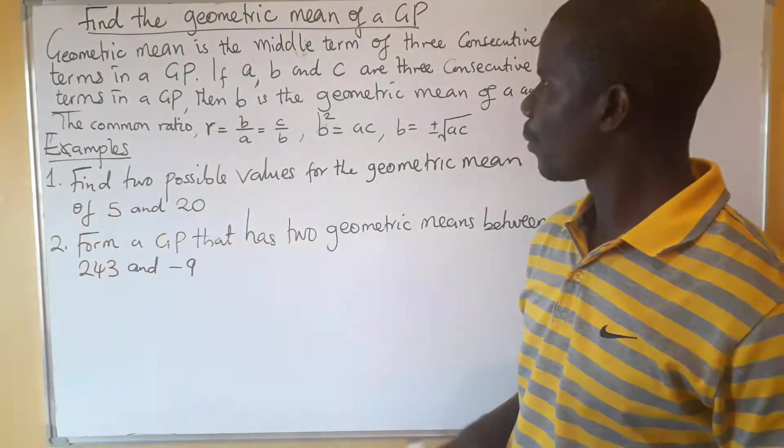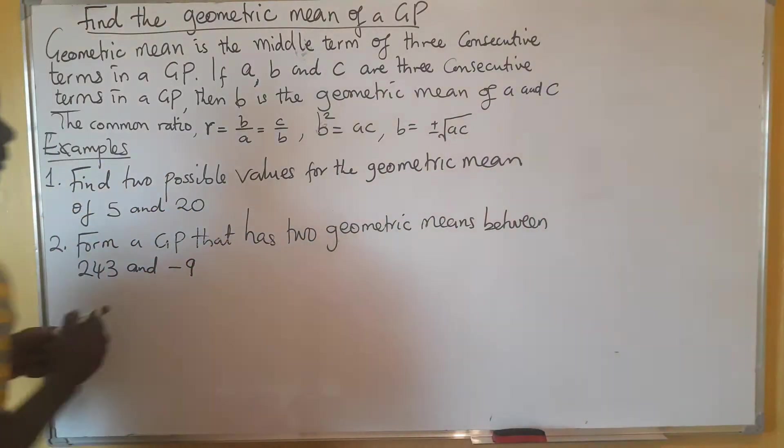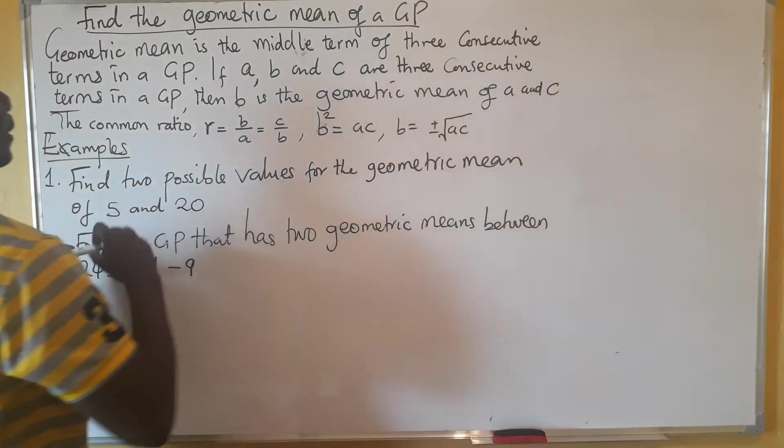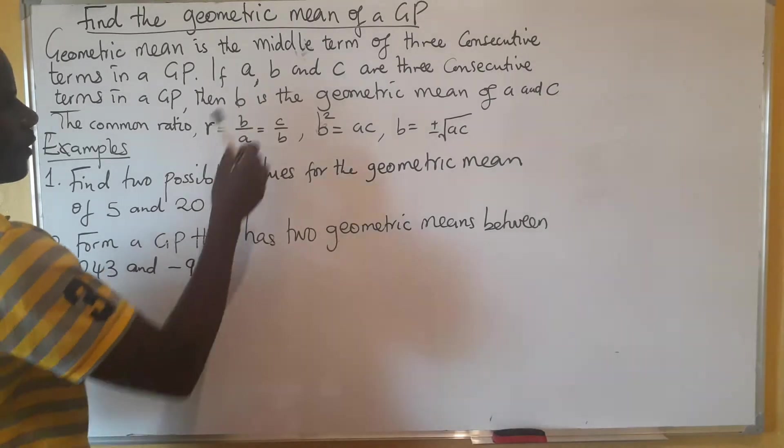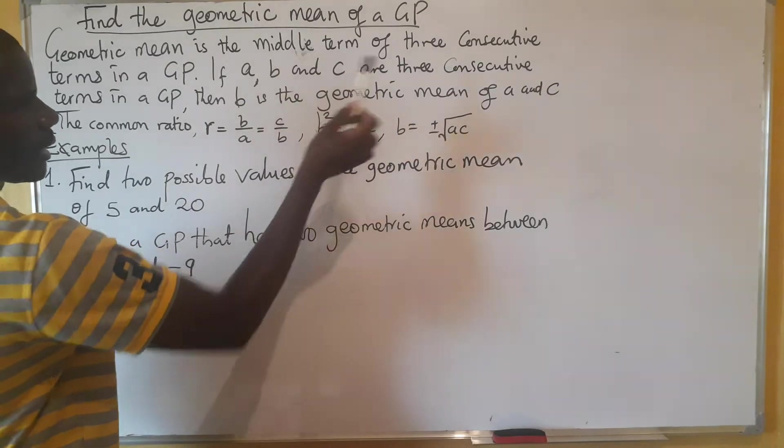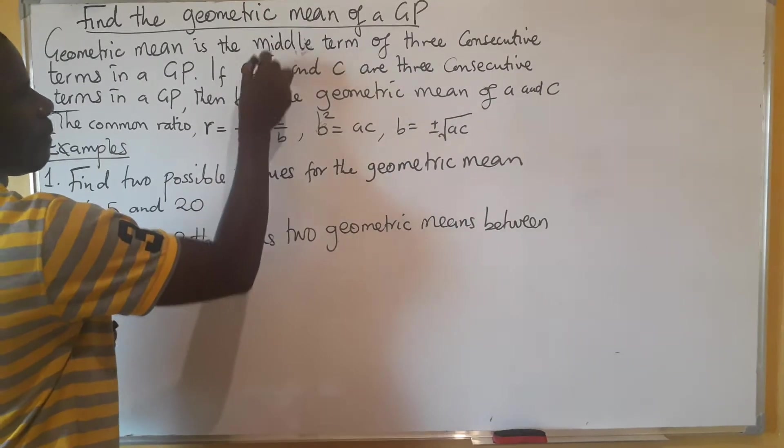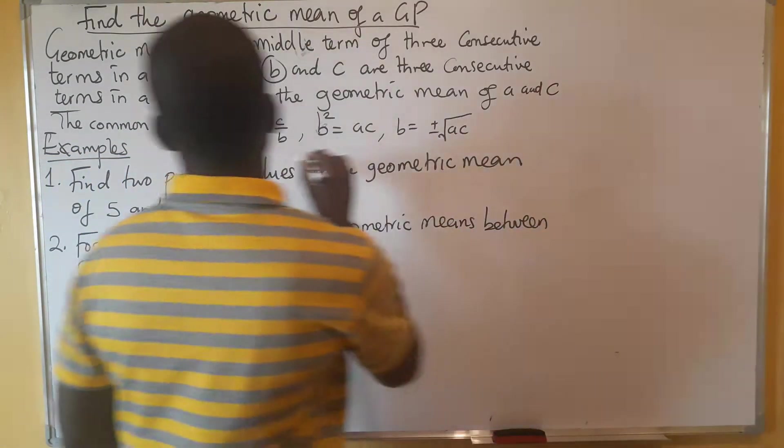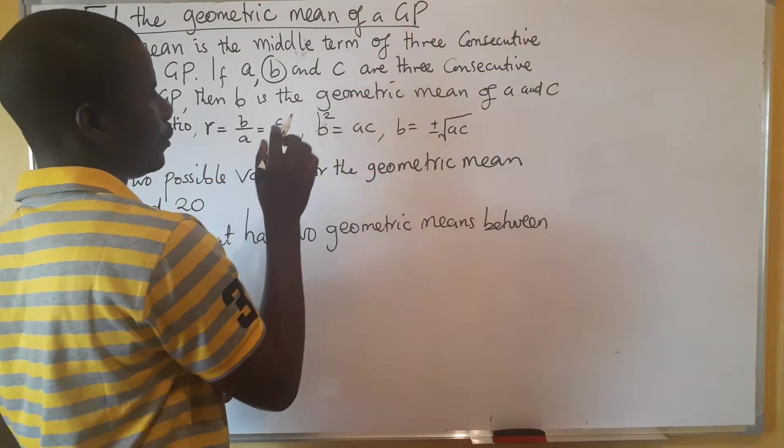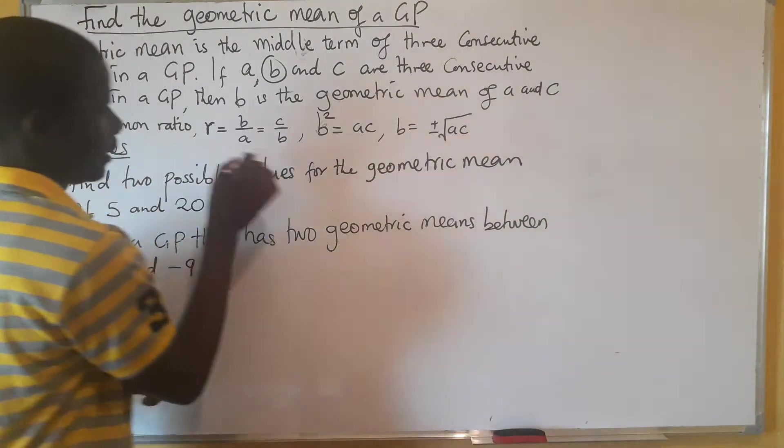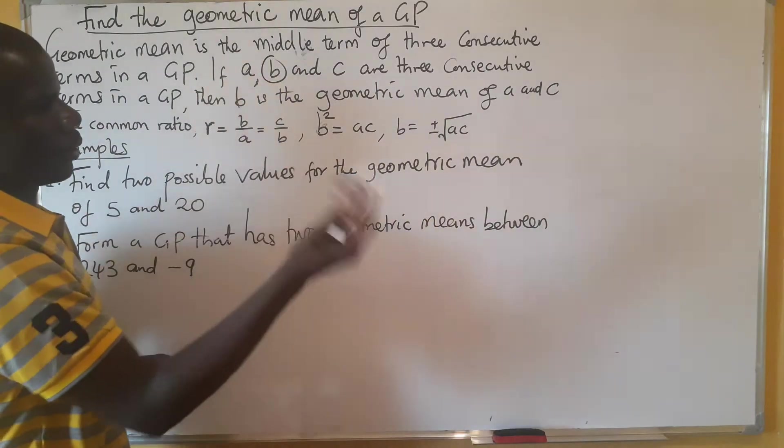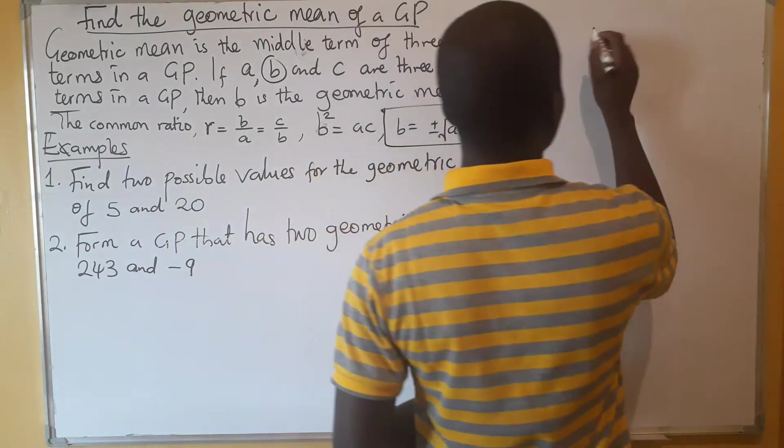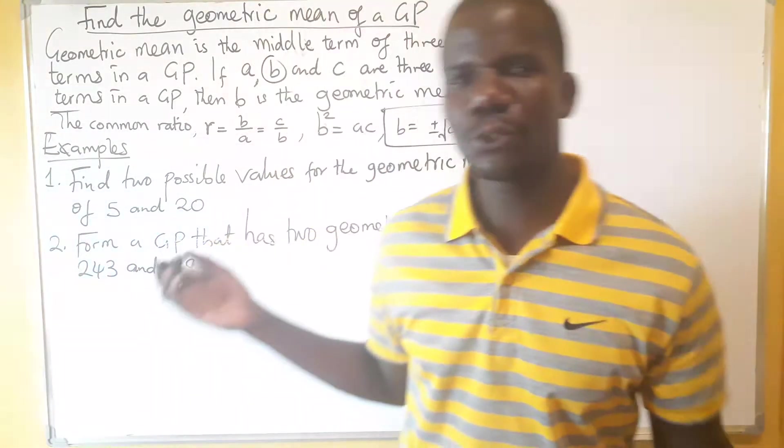So we are looking at what is the geometric mean. What is the geometric mean? We are saying it is the middle term of the three consecutive terms in a GP. We've given an example - if these were the three consecutive terms, then this middle one which is b, it is going to be your geometric mean. So this process here is trying to explain how we arrive at this formula.